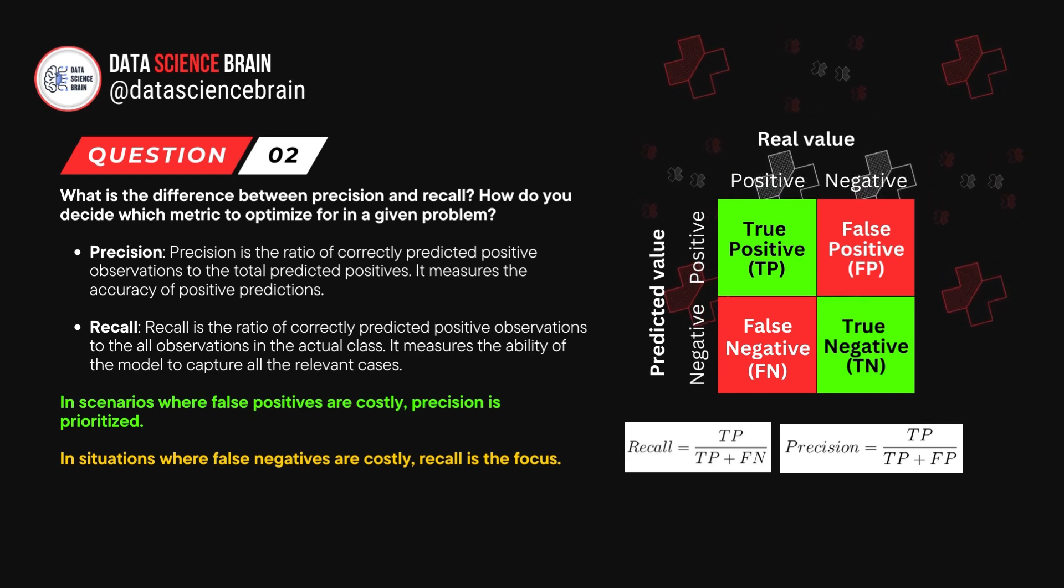Precision is the ratio of correctly predicted positive observations to the total predicted positives. It measures accuracy of positive predictions.